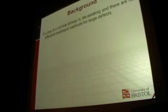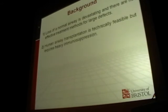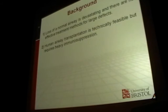The loss of a normal airway is devastating and there are no effective treatment methods for large defects. If you just have a small defect within the airway, it can be simply cut out and two healthy ends joined back together. But if the defect becomes too large, this becomes physically impossible to reconnect the healthy ends. It would be technically feasible to carry out an airway transplantation, but as with all organ transplants, this would require the recipient to have heavy immunosuppression for the rest of their life — drugs that are very toxic and leave the patient prone to infections, which is clearly not ideal.